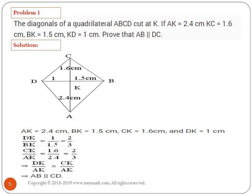If you follow, DK divided by BK is 1 by 1.5, which is 2 by 3, and CK divided by AK, which is 1.6 by 2.4, is also 2 by 3. In both cases we can see that the ratios are in common proportion. If their ratios are in common proportion, we can say that AB is parallel to CD. That's all for this problem.